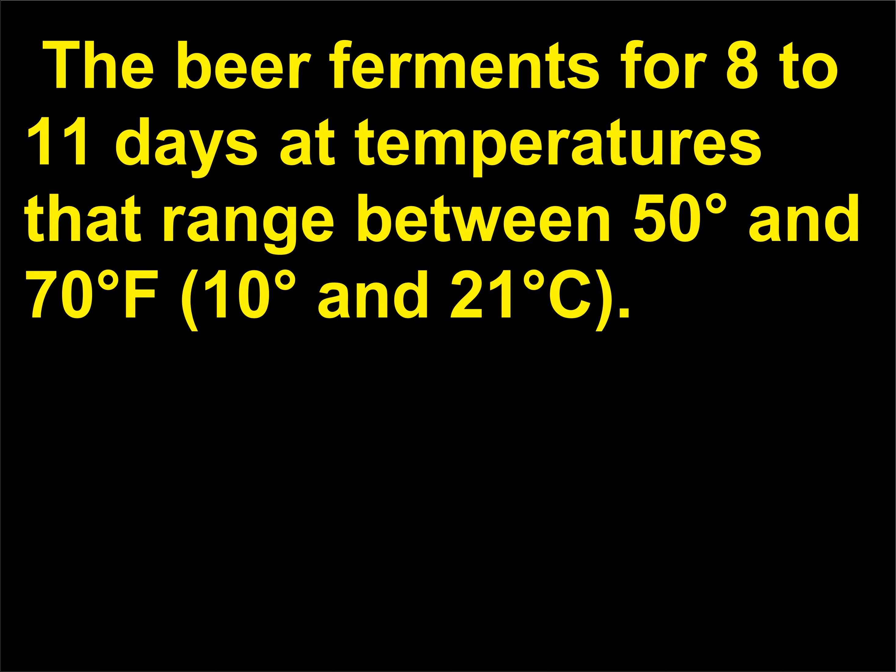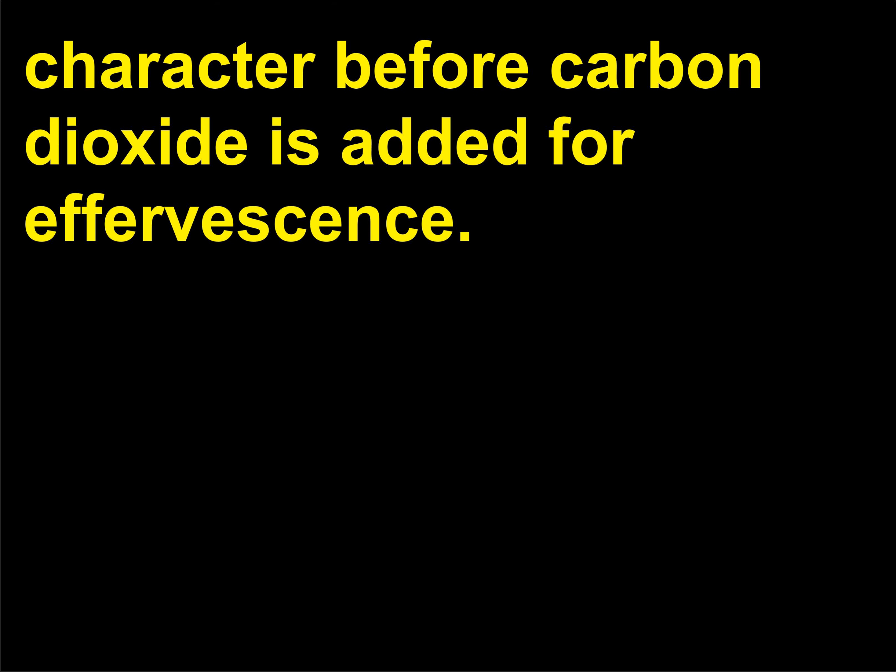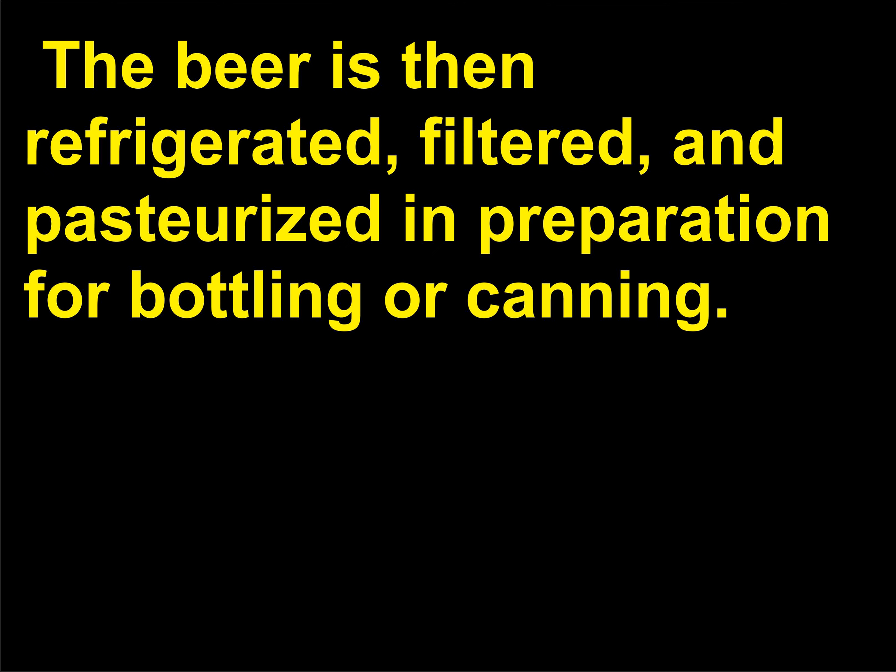The beer ferments for 8 to 11 days at temperatures that range between 50 and 70 degrees Fahrenheit (10 to 21 degrees Celsius). The beer is then stored and kept at a state close to freezing. During the next few months the liquid takes on its final character before carbon dioxide is added for effervescence. The beer is then refrigerated, filtered, and pasteurized in preparation for bottling or canning.